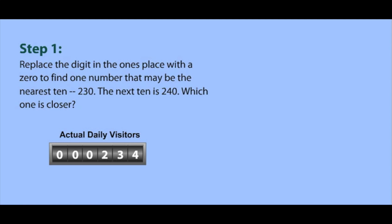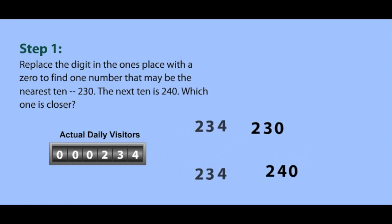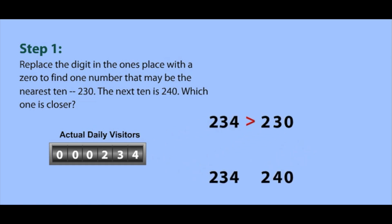First, replace the digit in the ones place with a zero to find one number that may be the nearest 10: 230. The next 10 is 240. Which one is closer? 234 is greater than 230 and less than 240 — it falls between those two 10s. Now we have to figure out which 10 is the nearest. Is it 230 or 240?